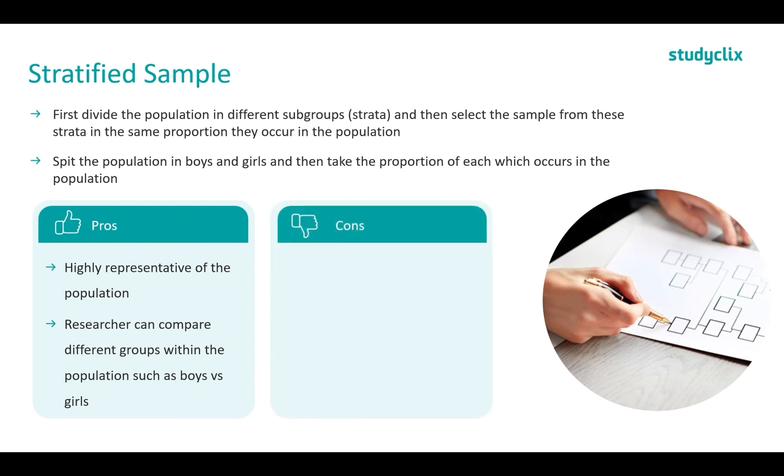The cons is much like the previous one: we need a list of the population and their characteristics. We may not have the details of everyone in the population. So if we wanted to study uni students it is pretty hard to get a complete list and there is also some privacy rules involved with that. It is also time consuming and costly.